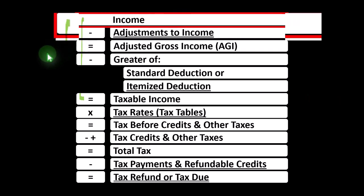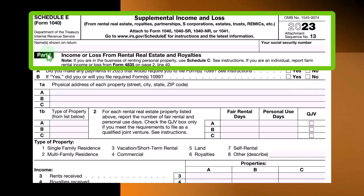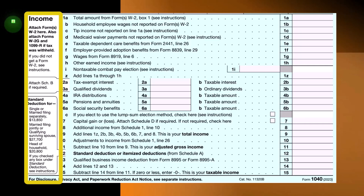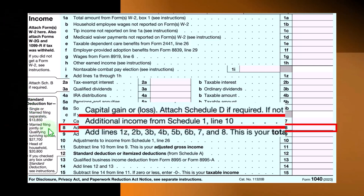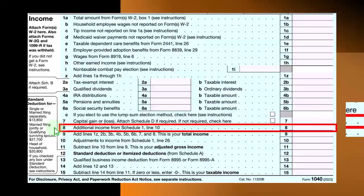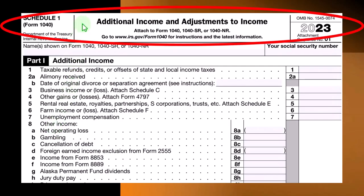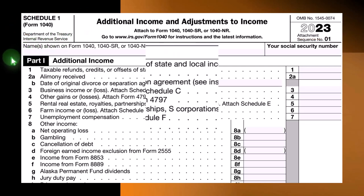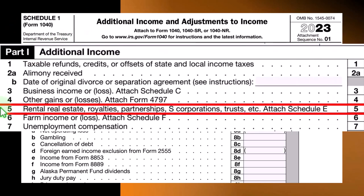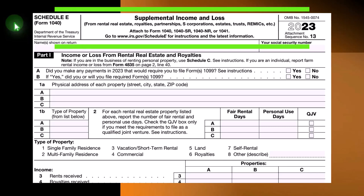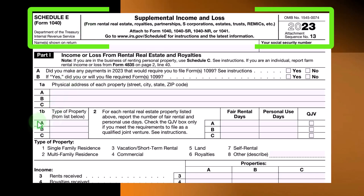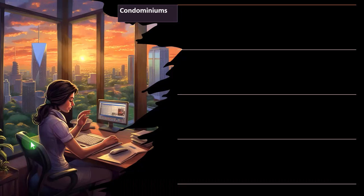The formula here outlines the calculation on Form 1040. Looking at the Income section, the Schedule E ultimately rolls into Line 8, Additional Income from Schedule 1. On Schedule 1, Additional Income and Adjustments to Income, Part 1, Additional Income, the Schedule E rolls into Line 5, Rental Real Estate Royalties. The Schedule E shows Supplemental Income and Loss from Rental Real Estate Royalties, with an income statement format per property.